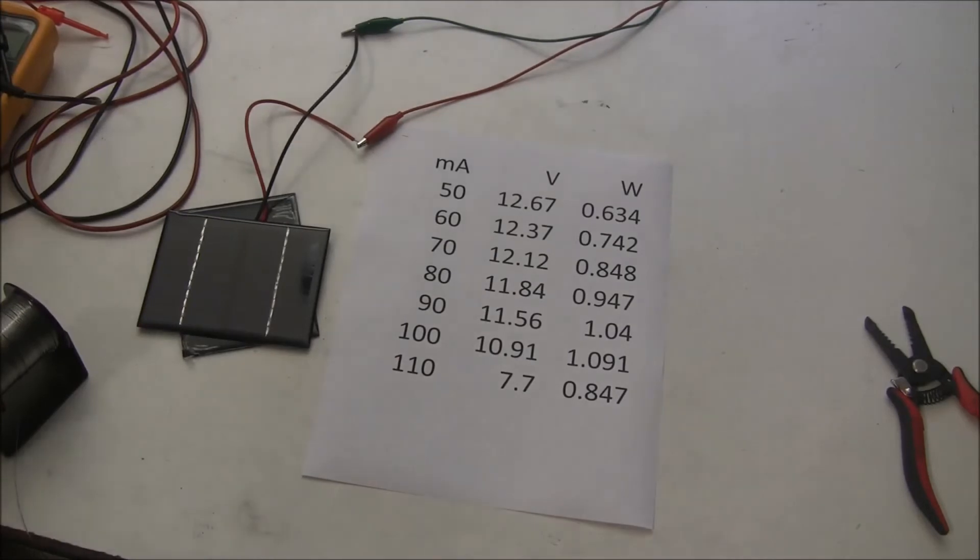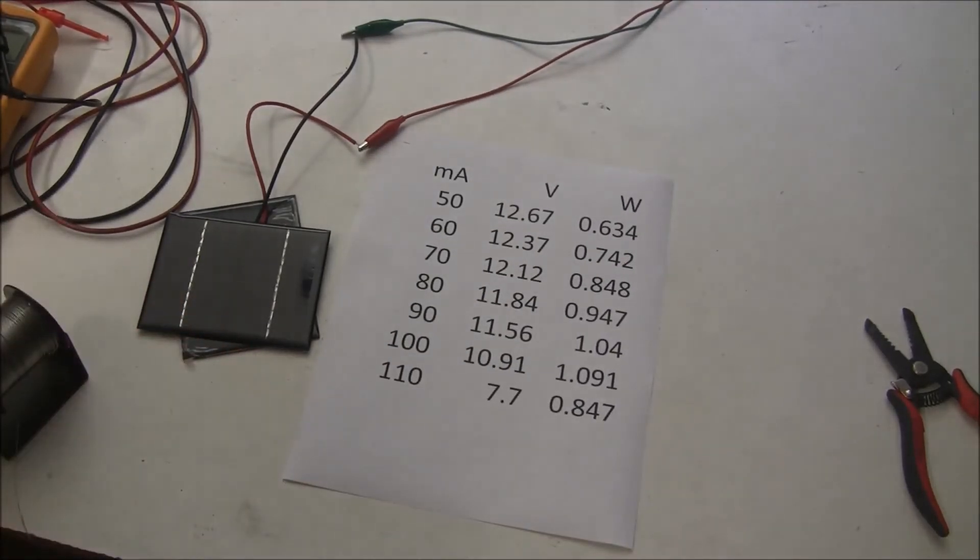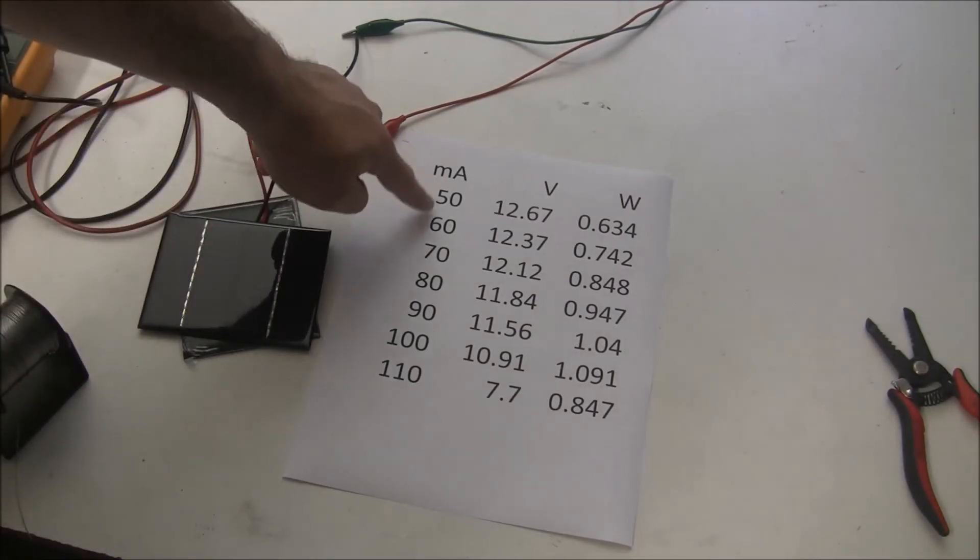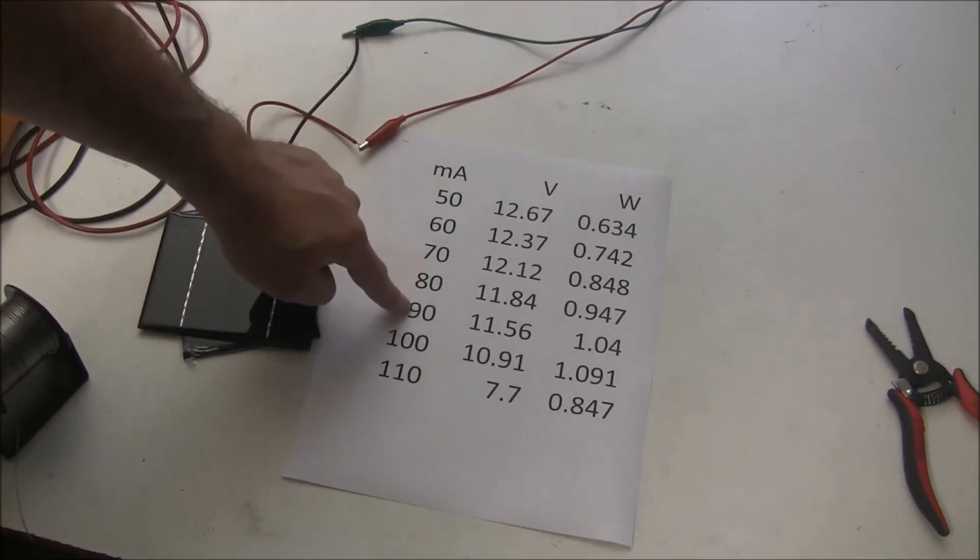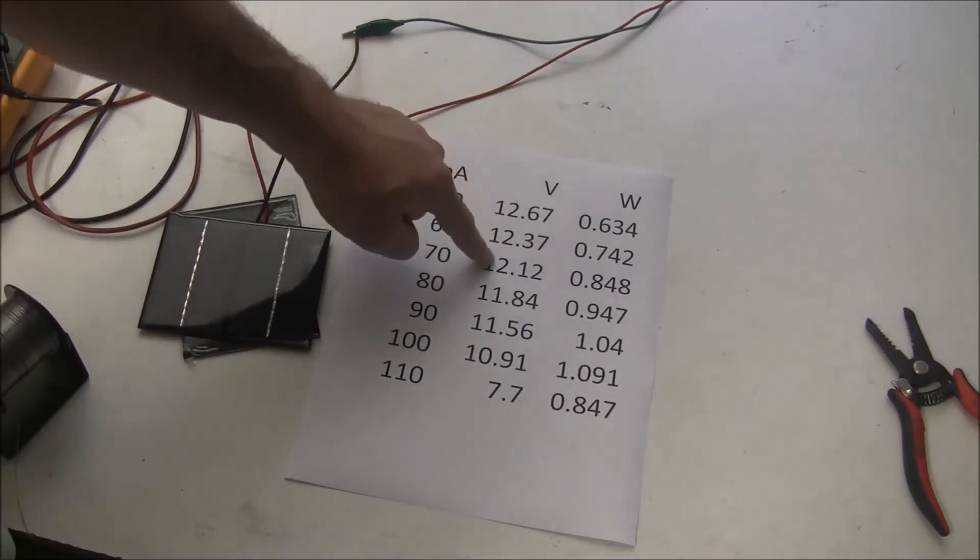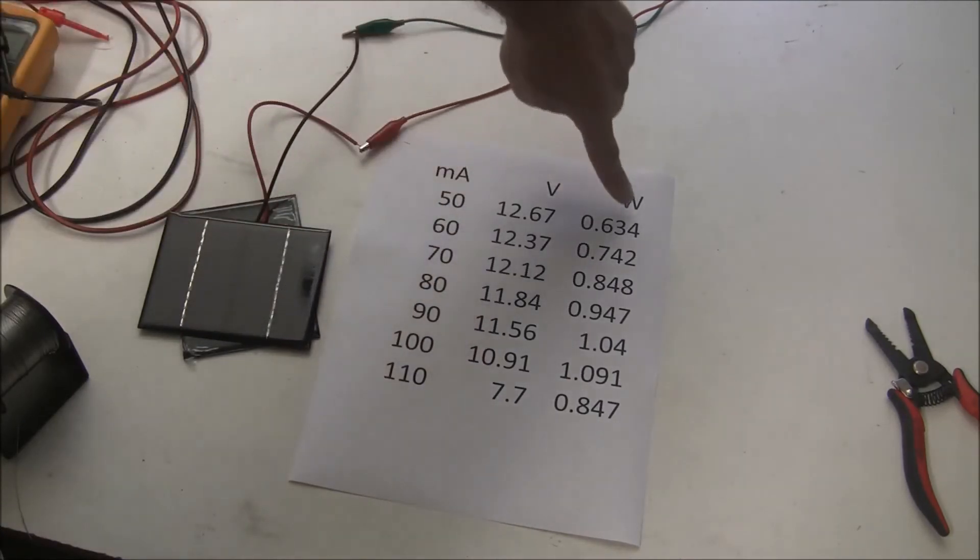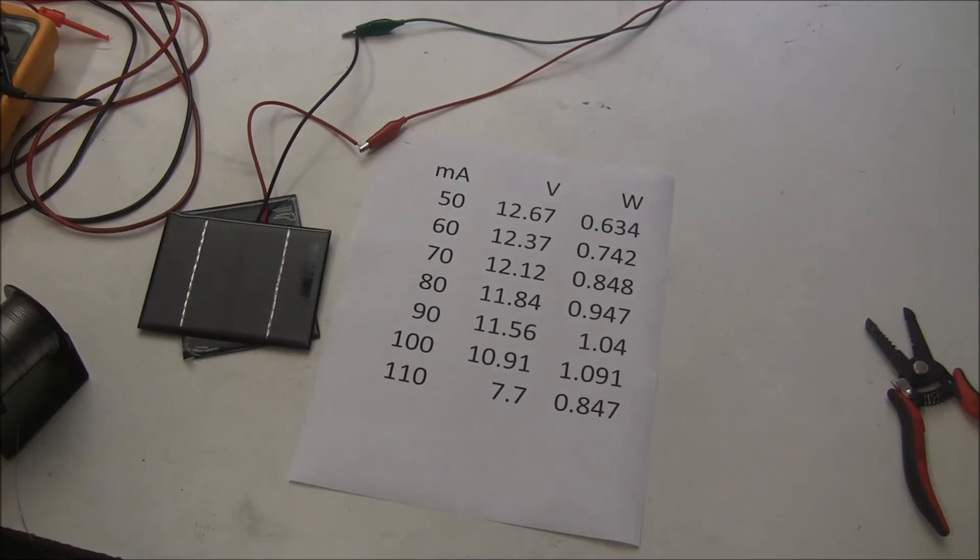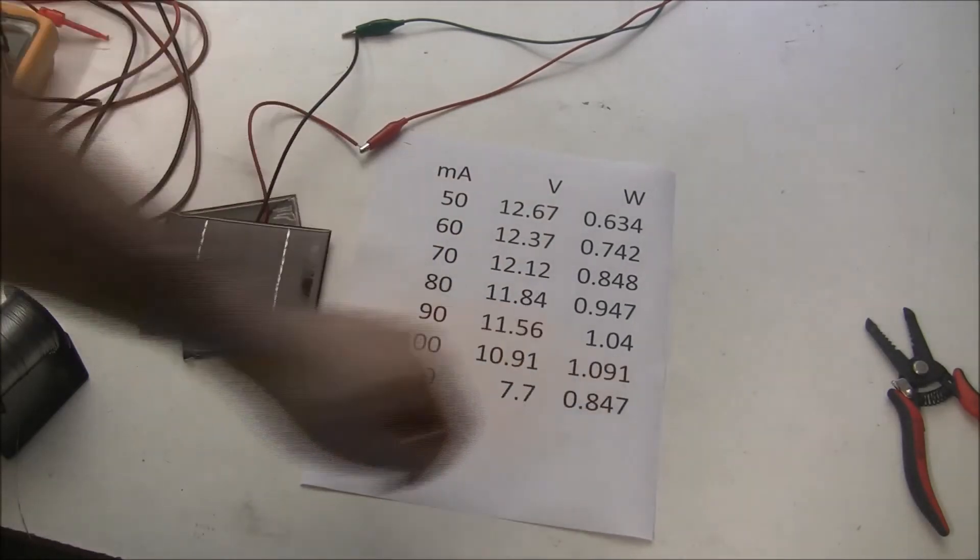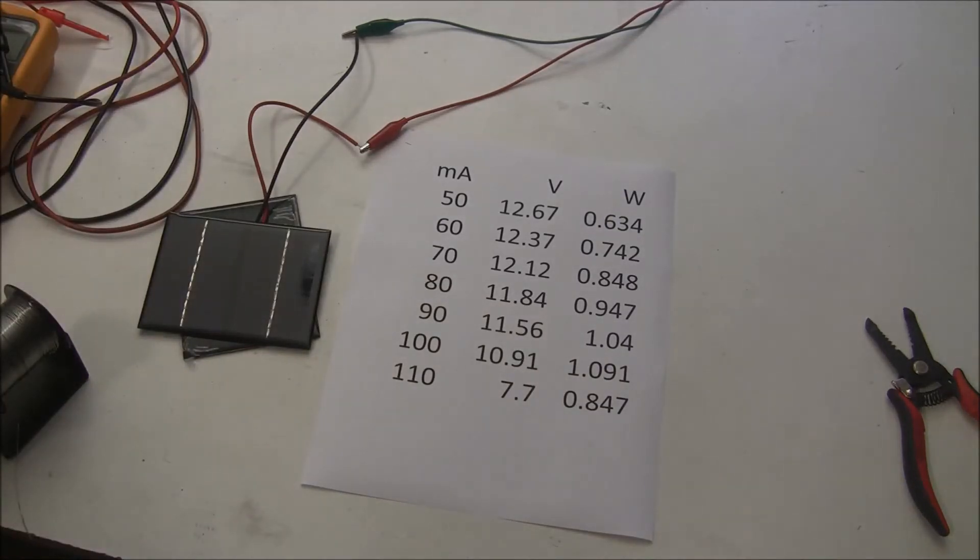Here's the data that we just collected, put into Excel with font size enlarged so you can actually read it. I was taking measurements with the electronic load, increasing the load by 10 milliamps on each data point, and I was measuring the voltage on the solar panel. With these two numbers, we can calculate the wattage. As you can see, the highest we were able to get it to produce was 1.09 watts, and the panel is rated at one and a half watts.